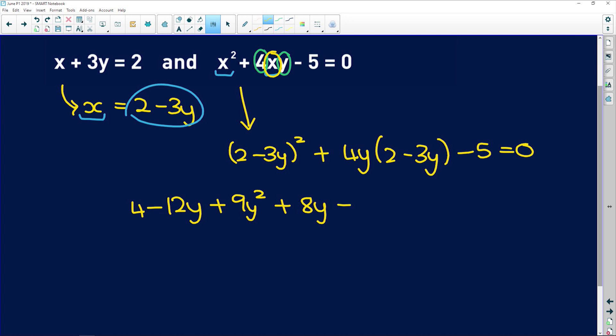So let's deal with the y squareds first. 9y squared minus 12y squared is going to give me negative 3y squared, then minus 12y plus 8y is minus 4y, and 4 minus 5 is negative 1.